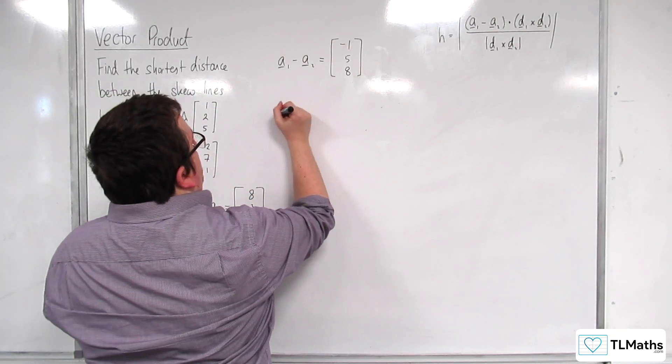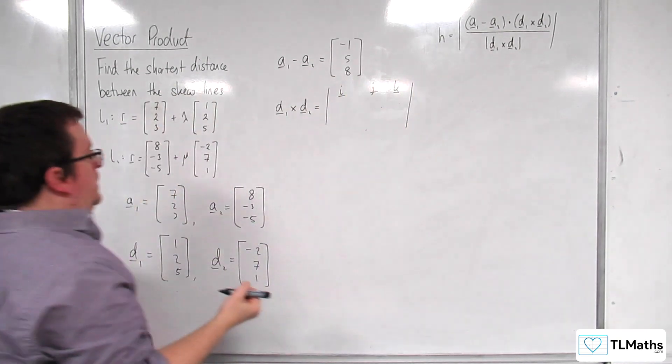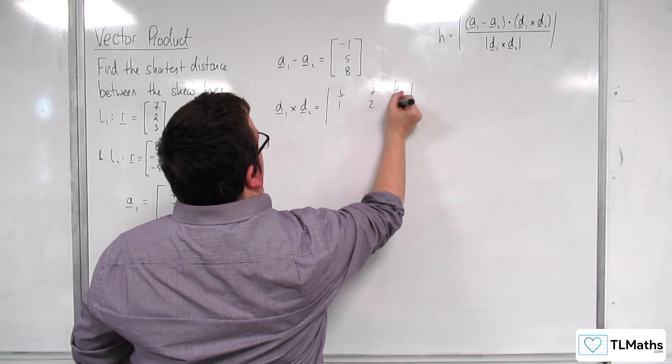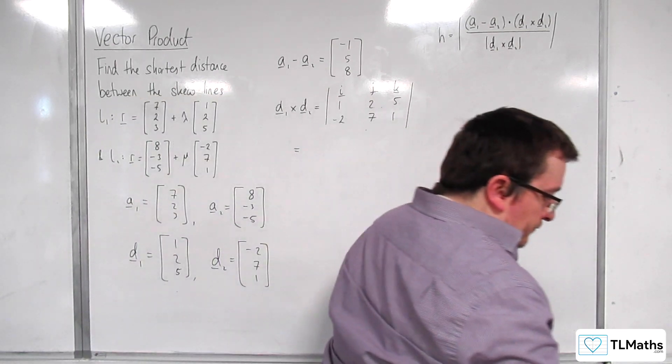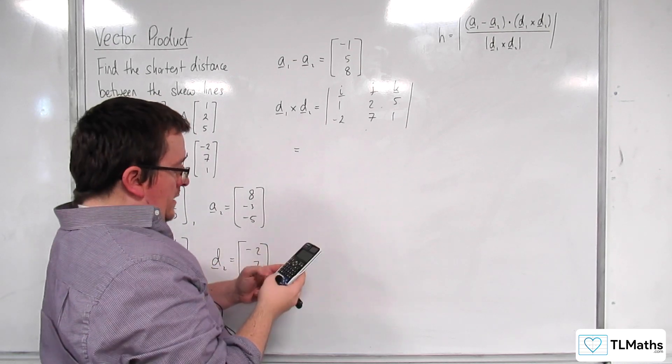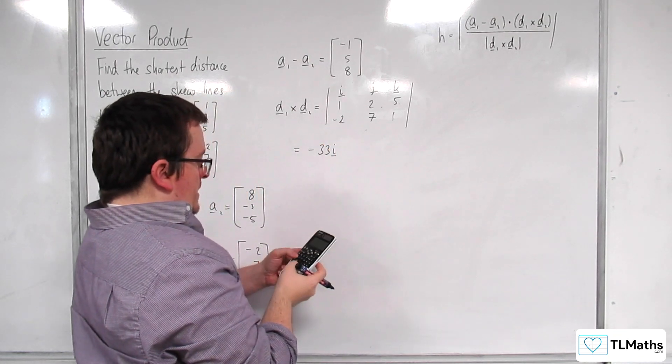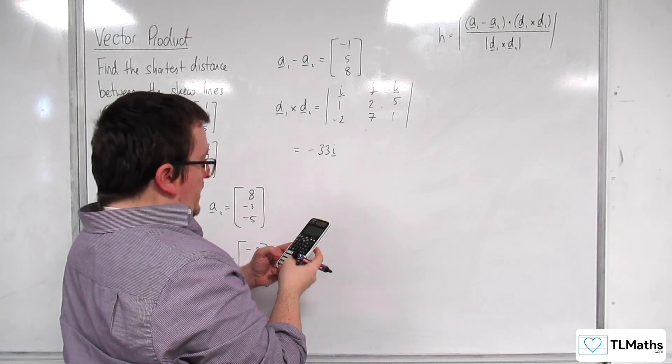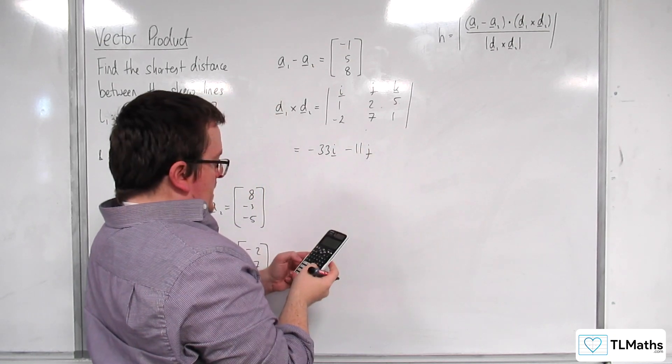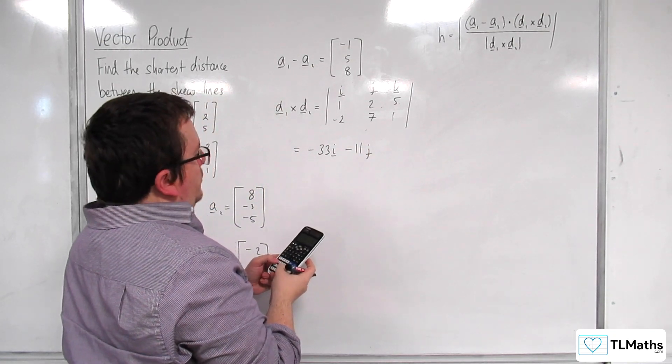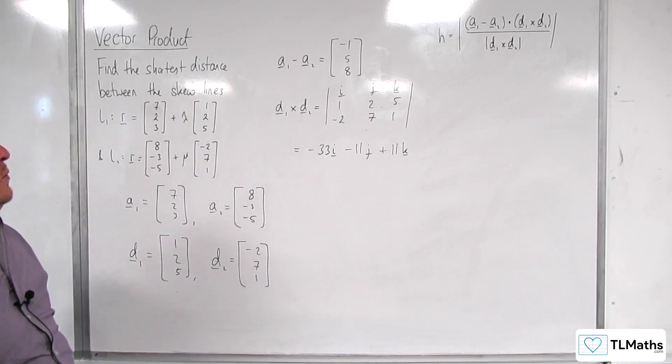We're also going to need to find D1 crossed with D2. I, J, K. So, 1, 2, 5. And minus 2, 7, 1. So, we have 2 take away 7 lots of 5, so minus 33 I. Then minus 1 times 1 take away 5 times minus 2, so minus 11 J. And then we've got 7, it's just plus 4, isn't it? So plus 11 K. So that is D1 crossed with D2.